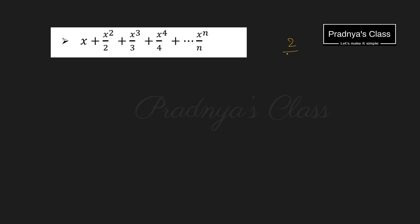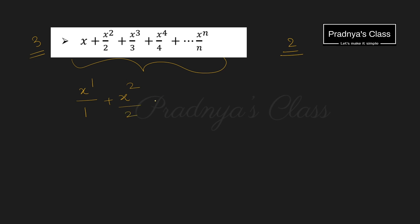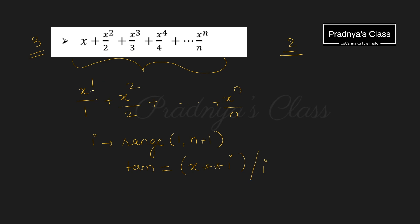We are done with 2 series. It's time to proceed to the third one. The terms start from 1: it is x^1/1, then x^2/2 and so on up to x^n/n. The variable i will run in the range 1 to n+1. The term is x**i divided by i, since the power and denominator are the same. Initialize sum to 0 and add each term. You can also use the arithmetic assignment operator.